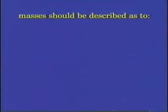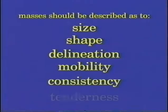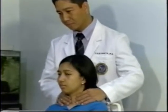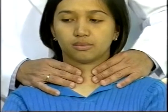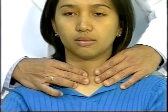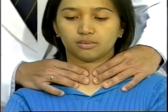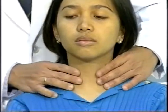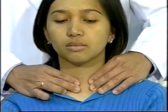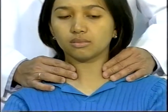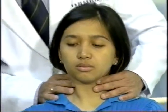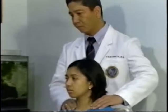If masses are felt, they should be described as to their size, shape, delineation, mobility, consistency, and any tenderness. The thyroid gland is also palpated. This is best done from behind the patient. Place the fingers of both hands on the patient's neck so that the index fingers are just below the cricoid cartilage. The patient is then asked to swallow. As the patient swallows, the thyroid isthmus rises under your fingers. Rotate your fingers slightly downwards and laterally to feel as much of the lateral lobes as possible. Note the size, shape, and consistency of the gland and identify any nodules or tenderness. This will conclude the examination of the head and neck.